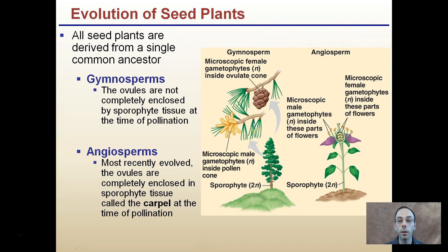If you look carefully at pine trees, yes they have cones, but they also produce male microspores containing pollen. Angiosperms, on the other hand, are plants that produce flowers. They most recently evolved; their ovules are completely enclosed in the sporophyte tissue called the carpel at the time of pollination. They produce true flowers, and the microscopic female and male gametophytes are both inside the flower parts.